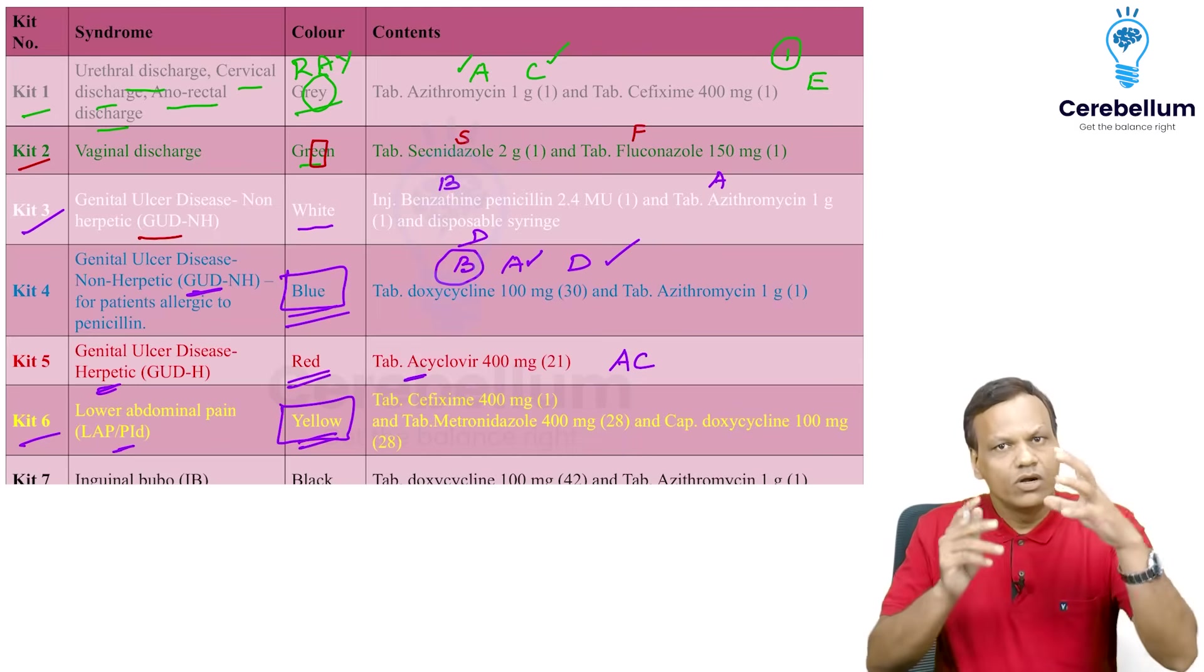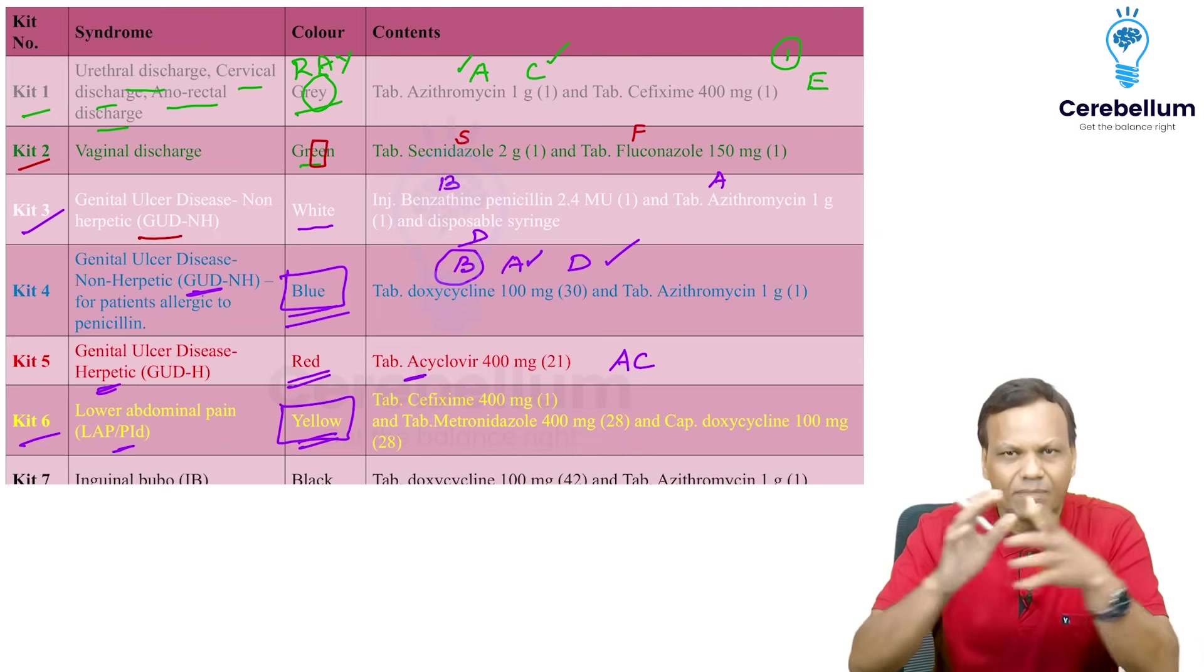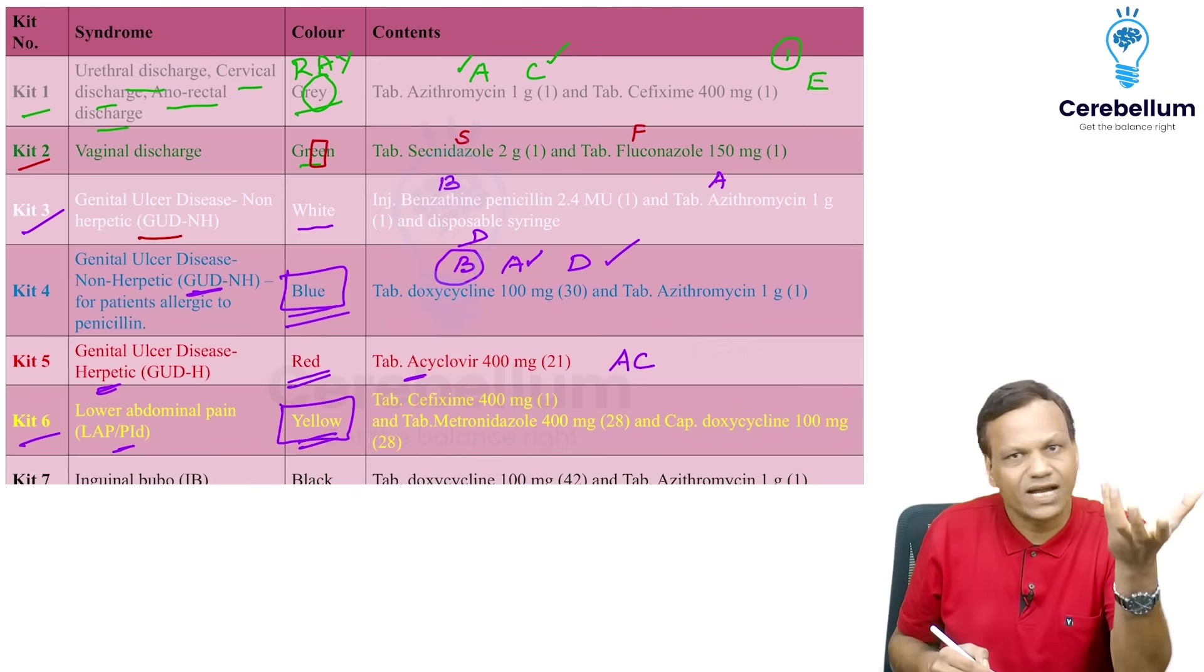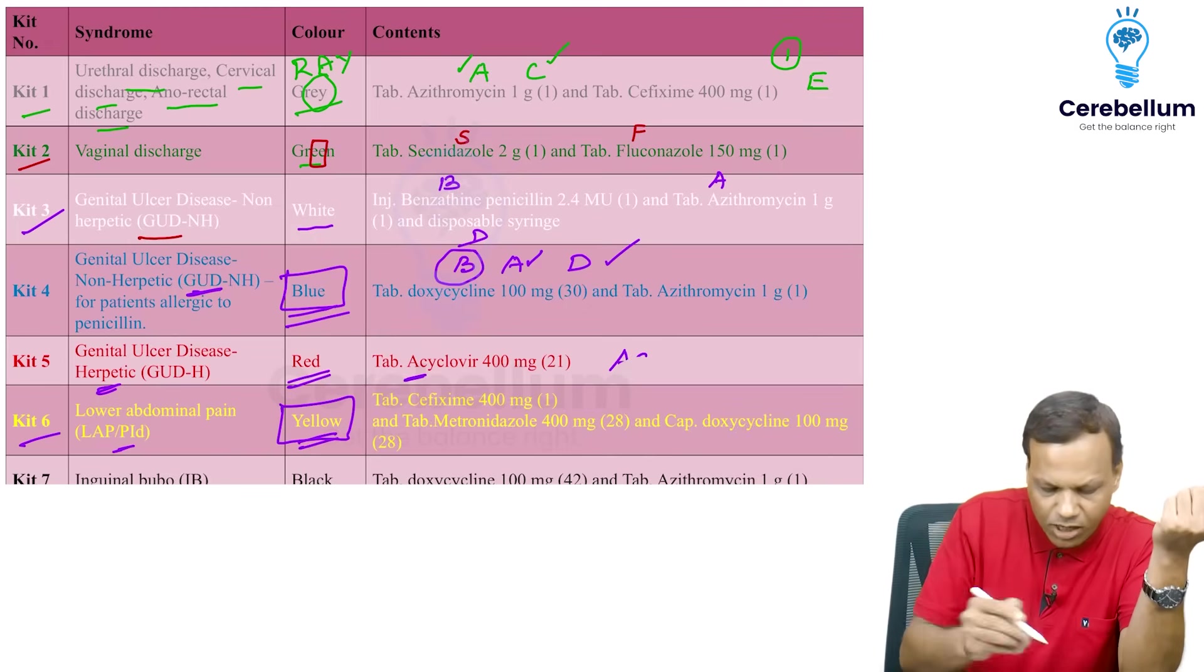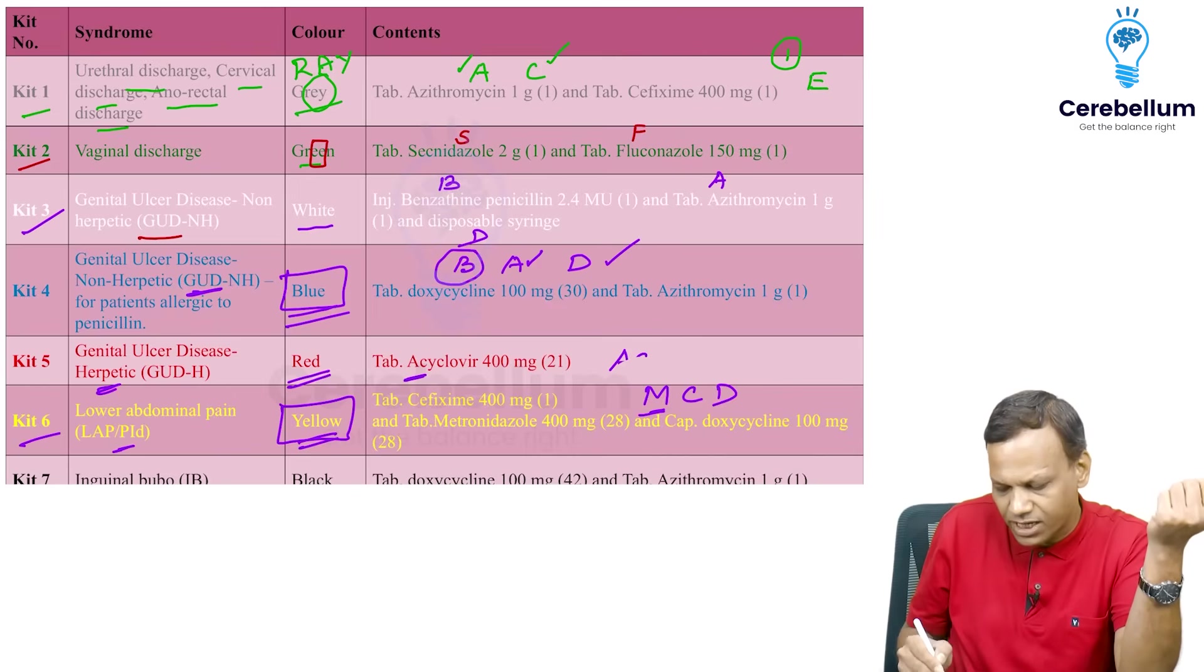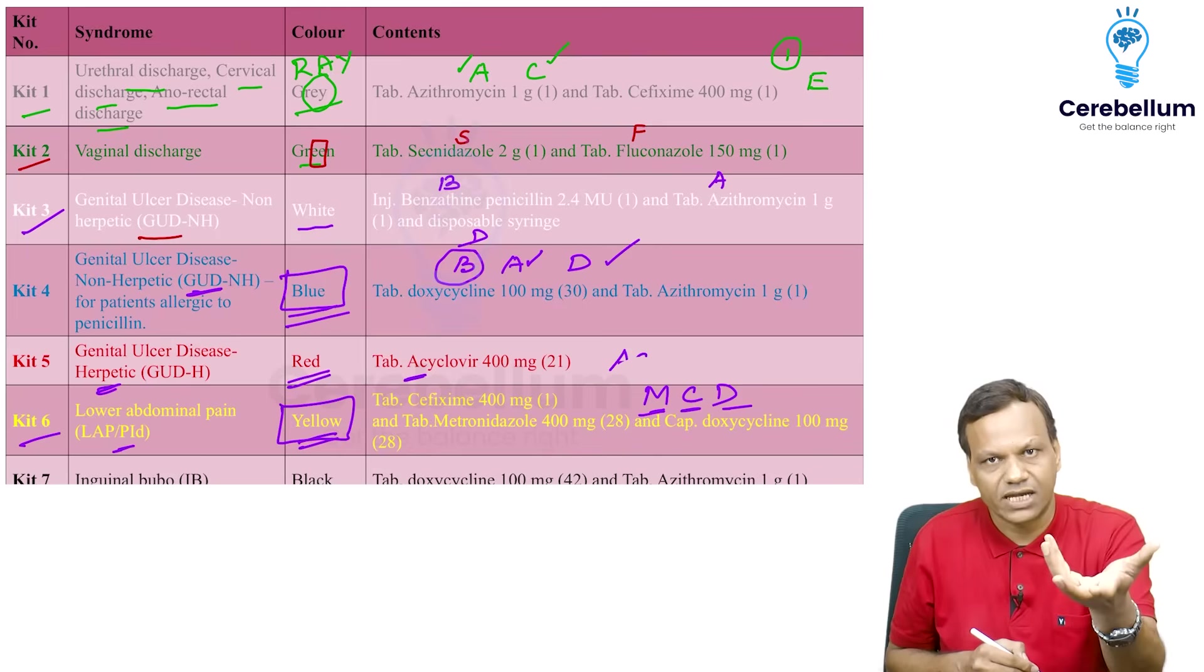And yellow we know, yellow means wastage. It gives a feeling of bad. Bad things are marked yellow. So yellow things, that means wastage, who cleans that? MCD. Municipal committee of Delhi MCD. So you can remember it contains metronidazole, cefixime and doxycycline. Metronidazole, cefixime and doxycycline.